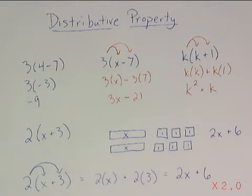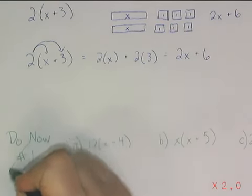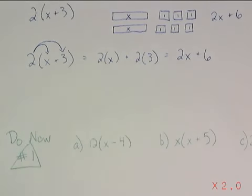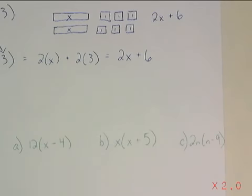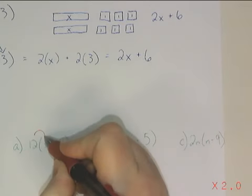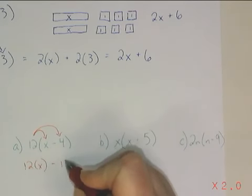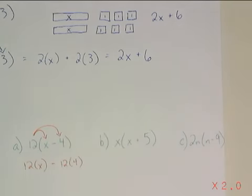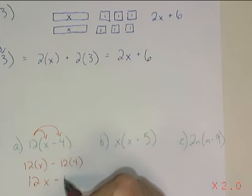Now it's time for you to try. On your paper, you need to do these 3 problems. Please put a triangle around do now number 1. Here are the 3 problems I would like for you to do. 12 needs to be multiplied by x and by 4. 12 times x is 12x, and 12 times 4 is 48.